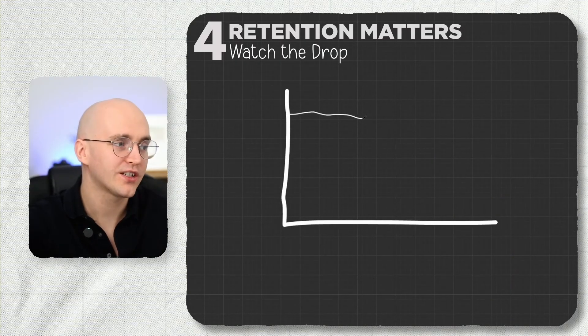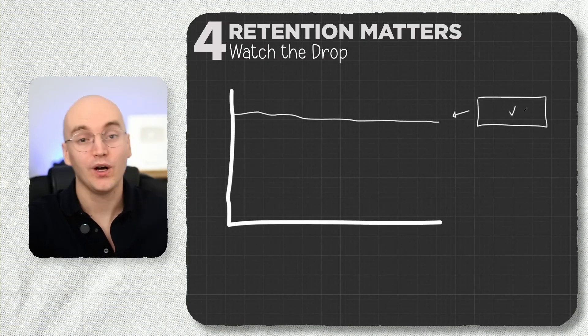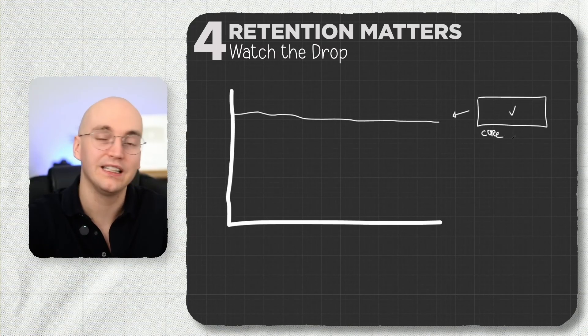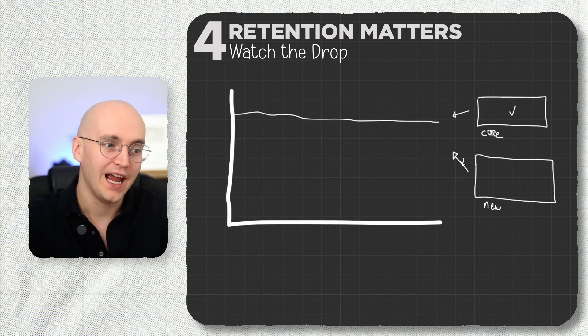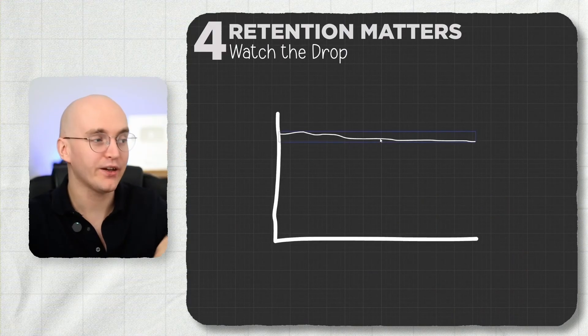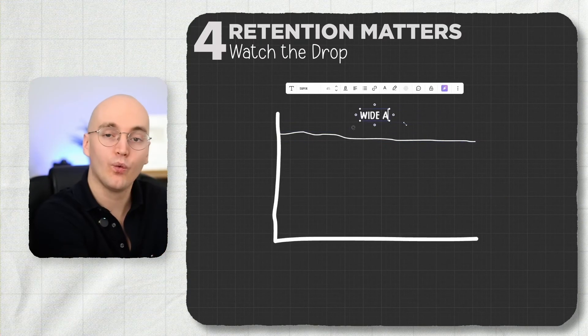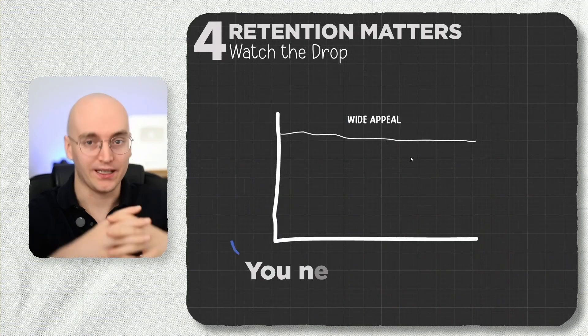The fifth insight: your data, including retention charts, gets affected by your audience reach. A high, flat retention chart might just mean it was only your core audience watching — newer viewers may never have been served that video. YouTube only showed it to those it believed would respond positively, so their behavior never impacted the chart. High flat retention often indicates what I call a wide appeal issue — the video is great for those it appeals to but doesn't reach a wide audience. You may need to broaden your topics or reduce references only your core audience will get.